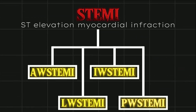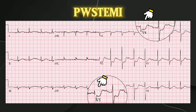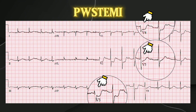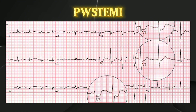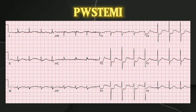And the last is posterior wall. When there is horizontal ST depression in leads V2, V3, V4, and V5, it is called posterior wall myocardial infarction. In posterior wall myocardial infarction, there is actually ST depression, but we still call it ST elevation because we cannot attach a lead to the back side of the patient.